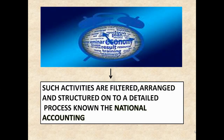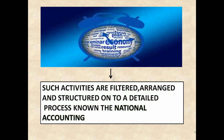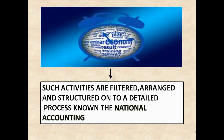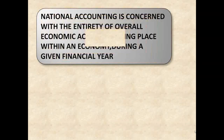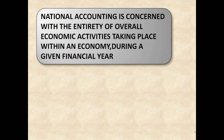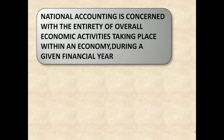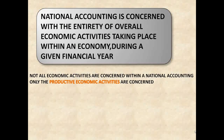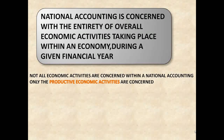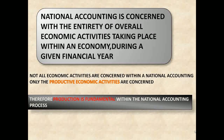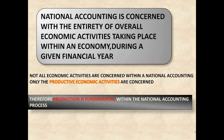A beautiful economy is comprised of so many activities. Such activities are filtered, arranged, and structured onto a detailed process known as national accounting. National accounting is concerned with the entirety of all economic activities taking place within an economy during a given financial year. However, not all economic activities are concerned — only the productive economic activities are included. Therefore, production is fundamental within the national accounting process.